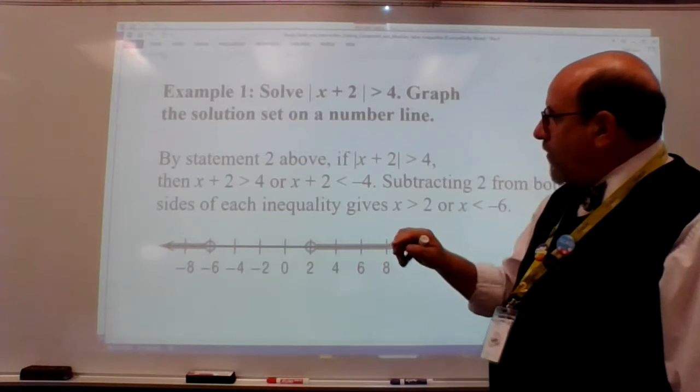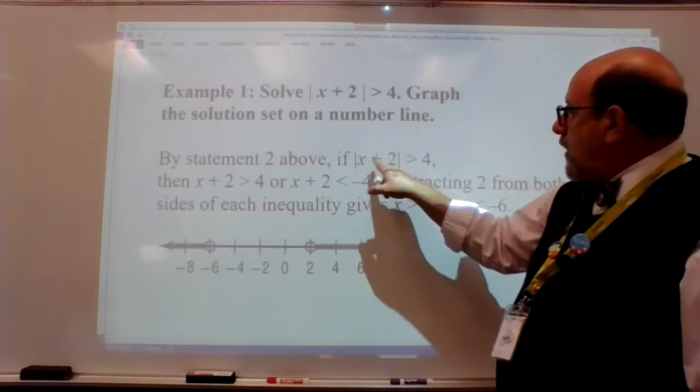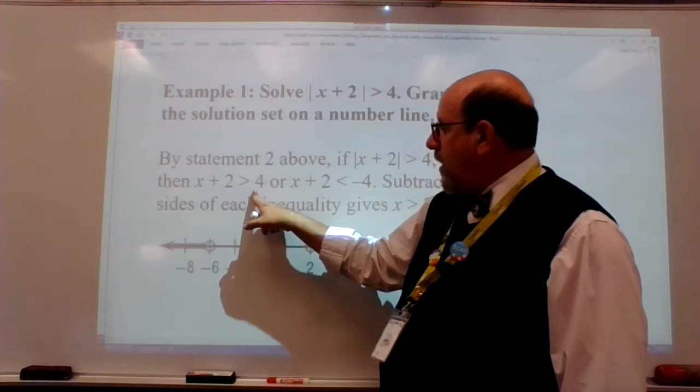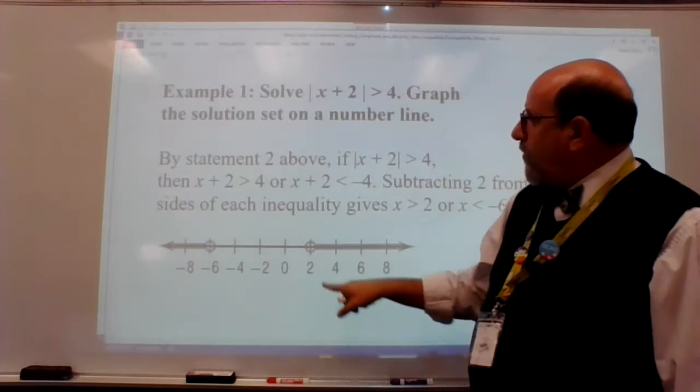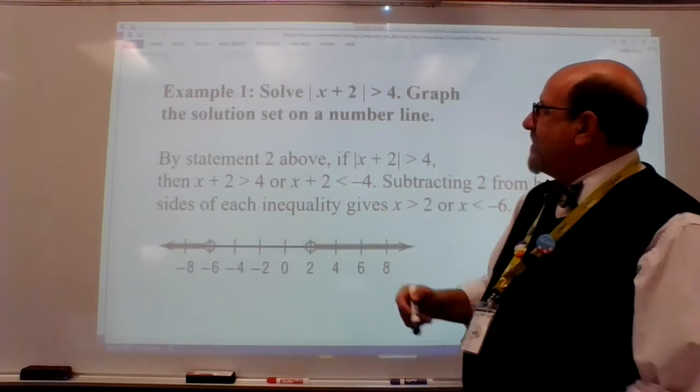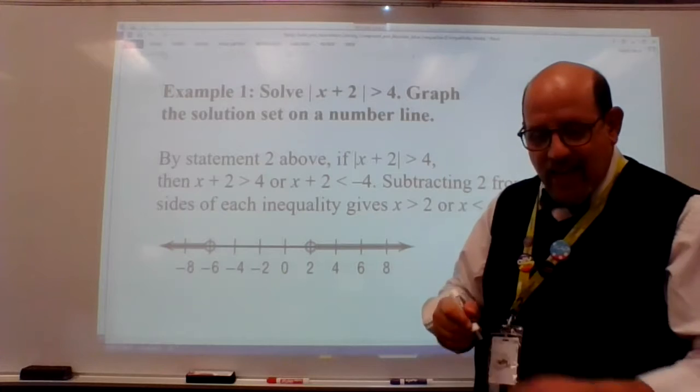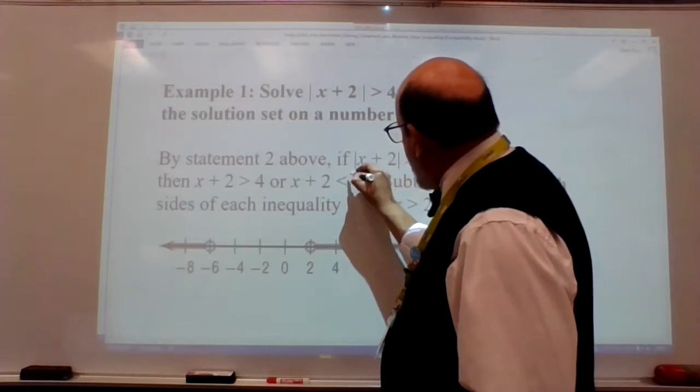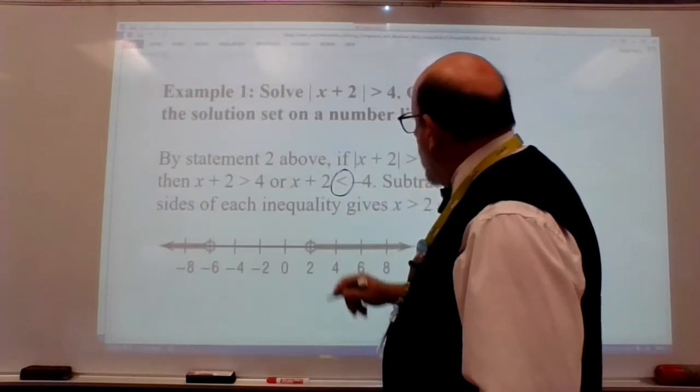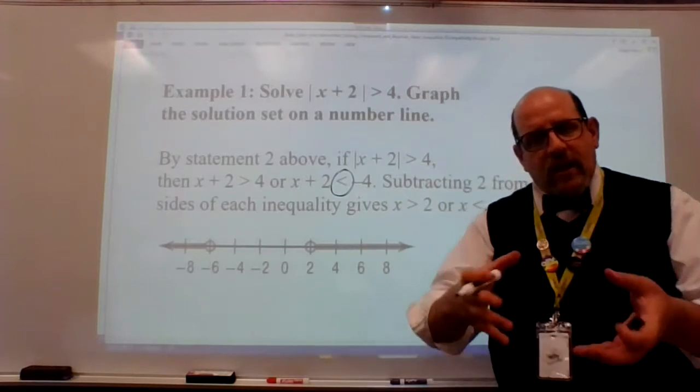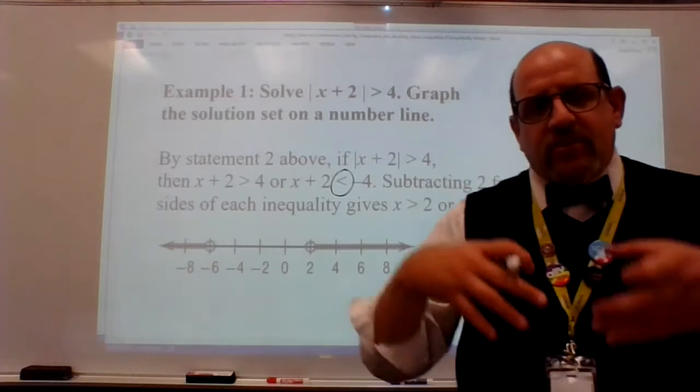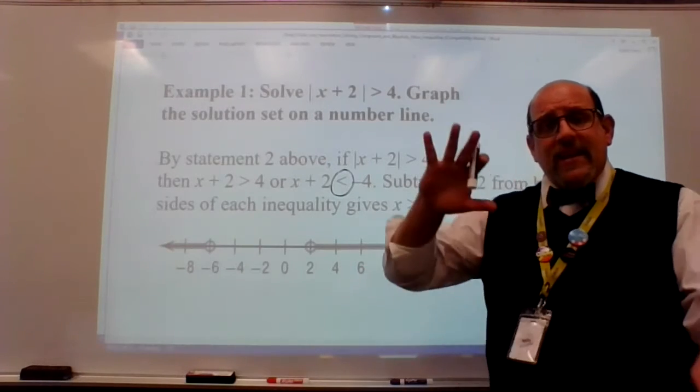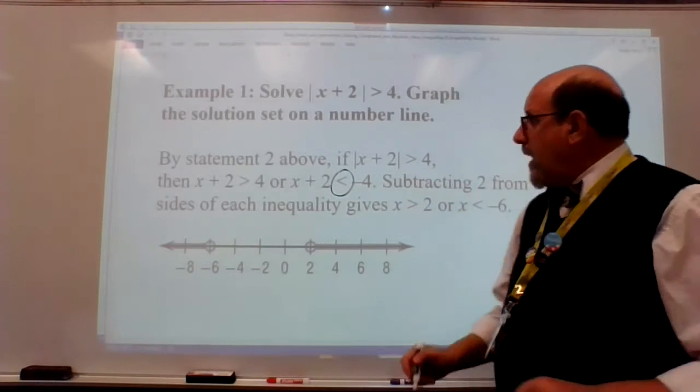So we're going to solve for x + 2 > 4. And we're also going to solve for x + 2 < -4. And this is our big change. When solving for the negative value, for the opposite value of that inequality, the inequality symbol flips.